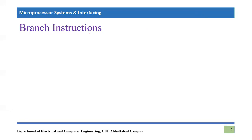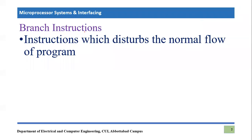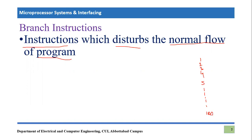Let's discuss what branch instructions are. Branch instructions are those instructions which disturb the normal flow of a program. First of all, we need to understand what normal program flow is. Let's say our program consists of 100 lines — one, two, three, four, five — and this continues up to 100 lines, or 100 set of instructions.